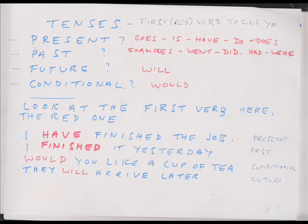Always look at the first verb in any tense formulation. 'I have finished the job' — the first verb, in red, is 'have': present. 'Finished' is after the first position and has no bearing on the four-tense indication. However, in the second case: 'I finished it yesterday' — in that position 'finished' indicates the past. 'Would' is conditional: 'Would you like a cup of tea?' And 'will' is future: 'They will arrive later.'